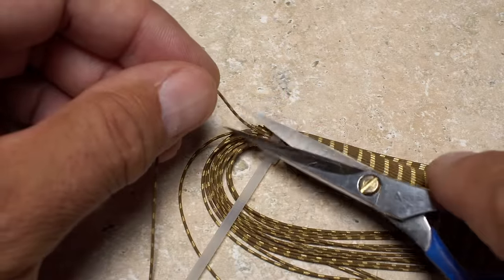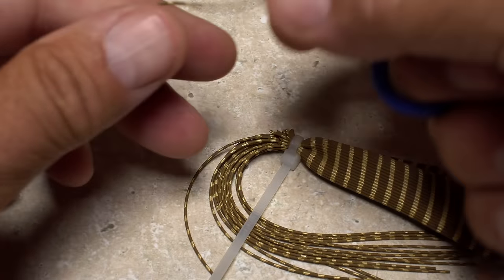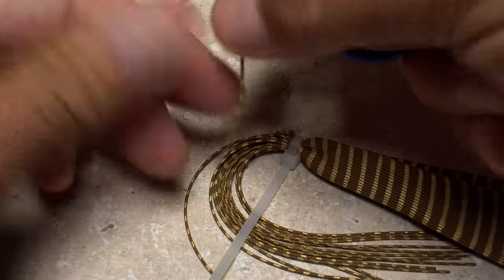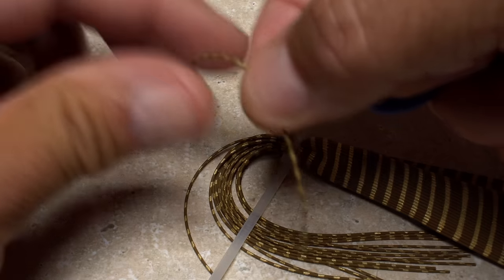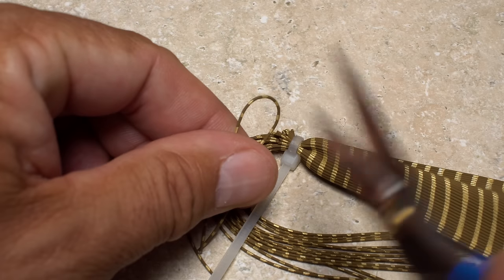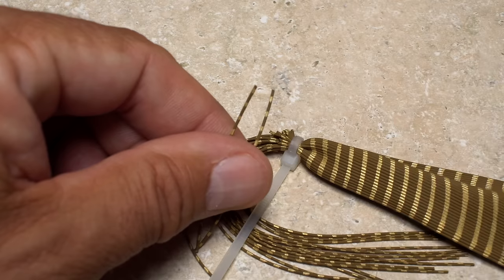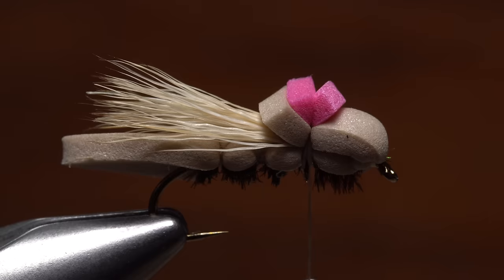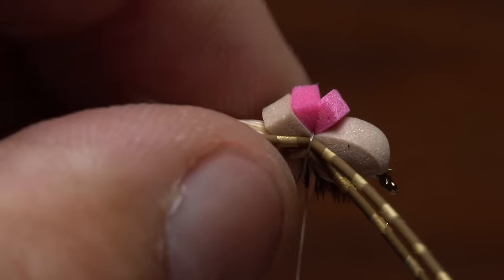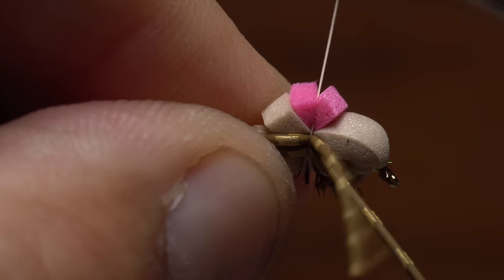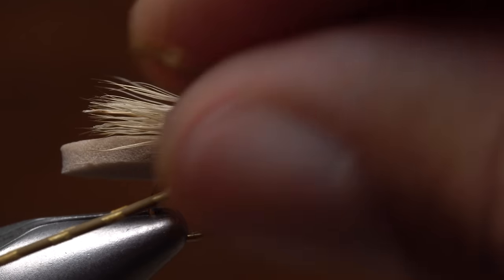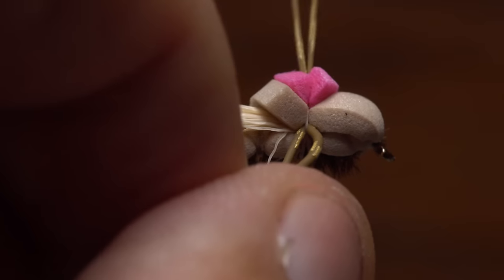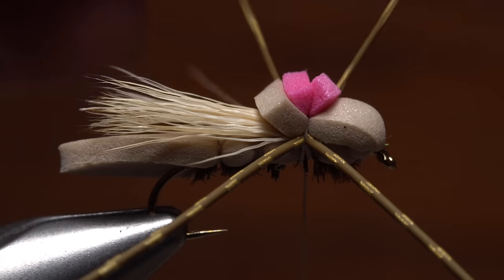A variety of materials can be used for the fly's legs. Here I'm going to go with medium sized striped round rubber legs. A single segment snipped in half is enough to make four legs. Lay both strands against the near side of the hook and take two thread wraps to lightly secure them. Pull the top strand up and over to the other side of the foam body so the legs are mirror imaged on either side of the fly.